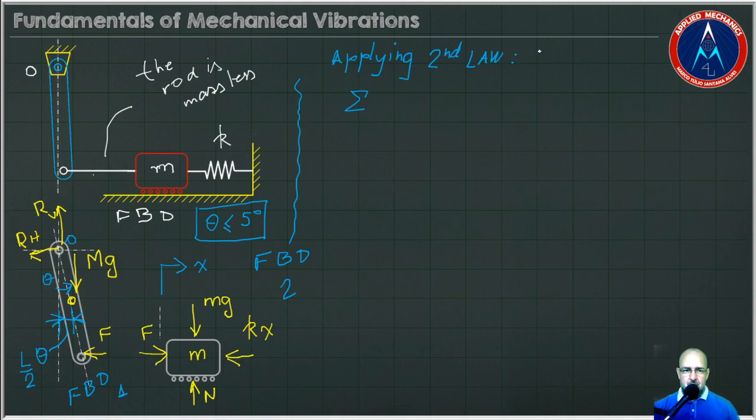Applying second law to the FBD1, we have the sum of moments around point O because it's the pivot, is equal to moment of inertia of mass about O, the total moment of inertia times angular acceleration theta double dot. By FBD we need to consider a reference here; in this case the bar rotated counterclockwise, counterclockwise positive, so let's go on.